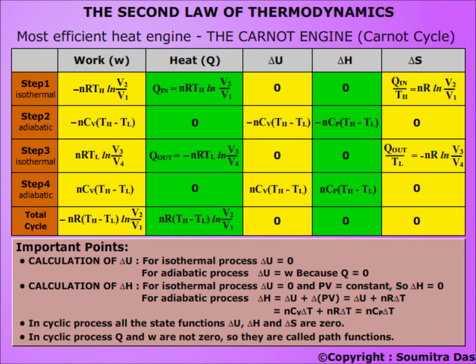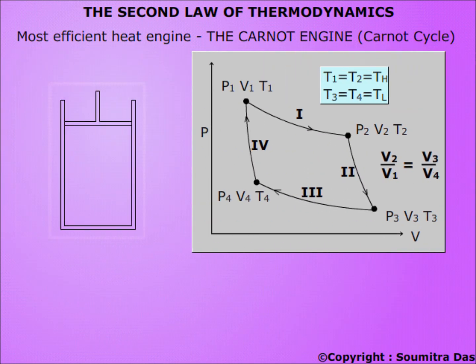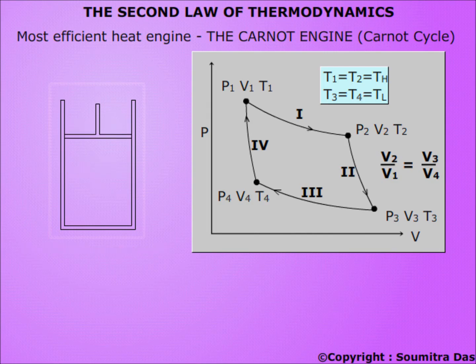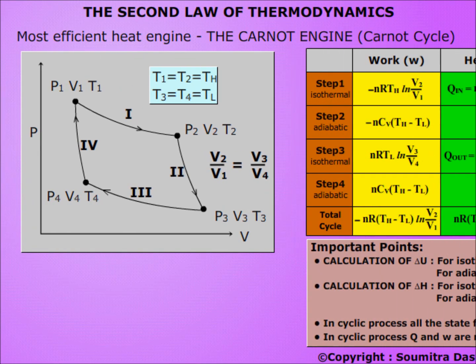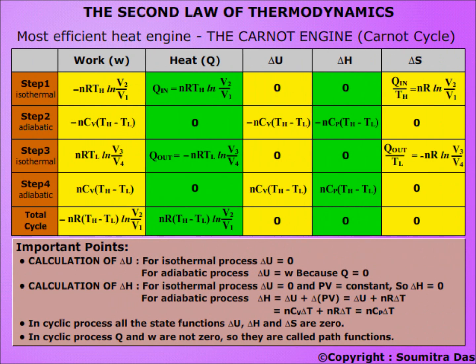Step 3 is isothermal compression at the lower temperature TL. Here work is done on the system, so the work done is positive. It is equal to nRTL · ln(V3/V4), which equals nRTL · ln(V2/V1).